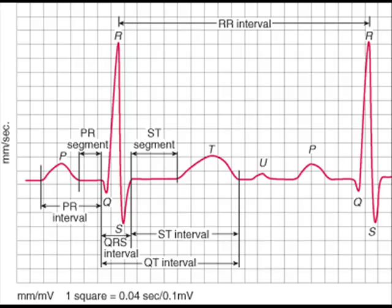ST segment is the linear interval at the end of S wave to the end of T. QT interval is the interval between Q and the end of T. QRS is the interval between Q and S. Now let us review some of the most important EKGs.